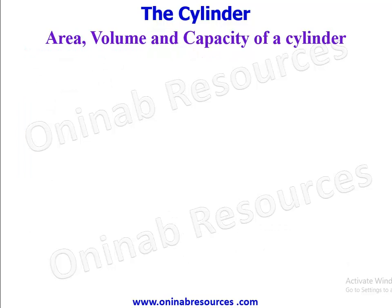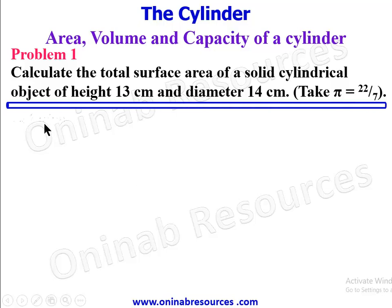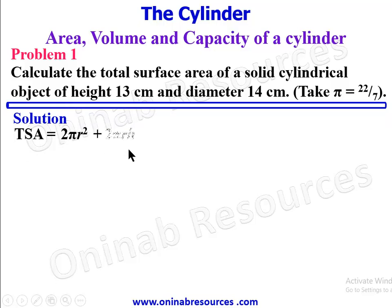Problem 1: Calculate the total surface area of a solid cylindrical object of height 13 centimeters and diameter 14 centimeters. Take π = 22/7. Since it is a solid cylindrical object, the total surface area is 2πr² + 2πrh, which factorizes to 2πr(r + h).